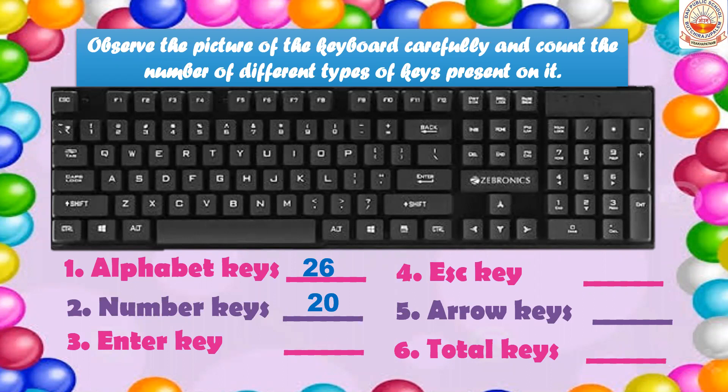The third key is the enter key — as already told, there are two enter keys, so write two. Next, escape key: there is only one, located at the top left corner. Arrow keys: you all know there are four, so write four. For total keys on a keyboard, if you count all the keys, there are totally 104 keys. A standard QWERTY keyboard has 104 keys.